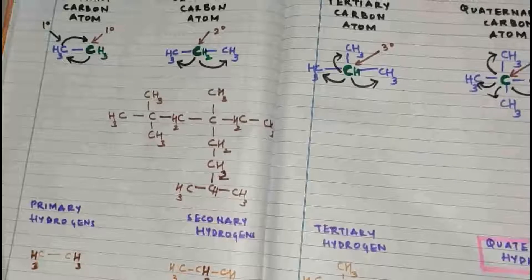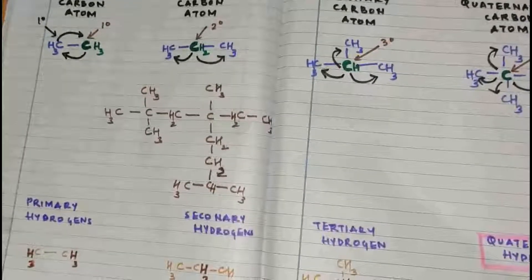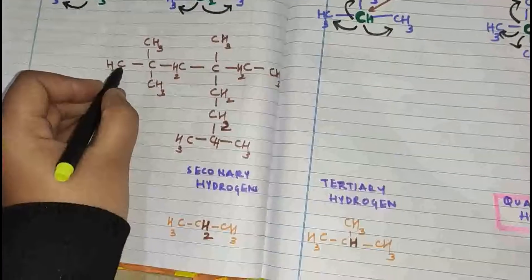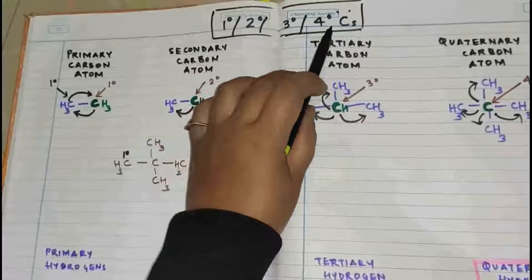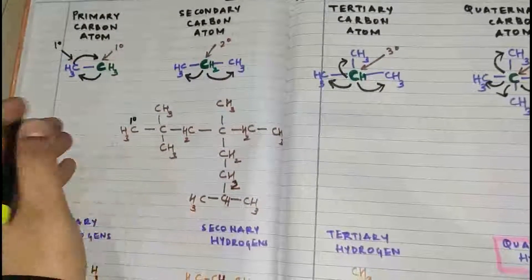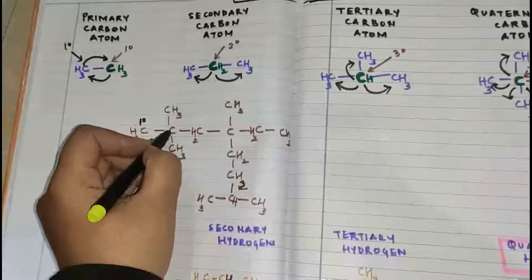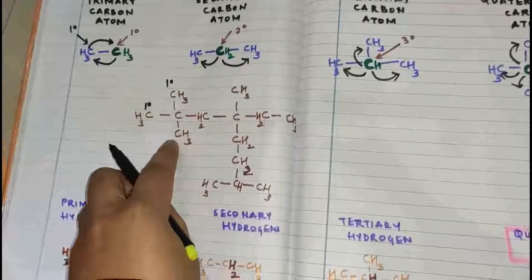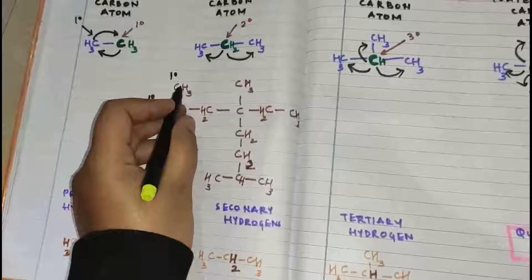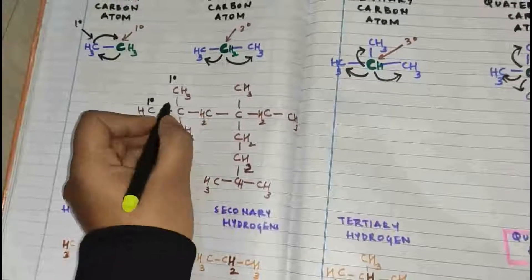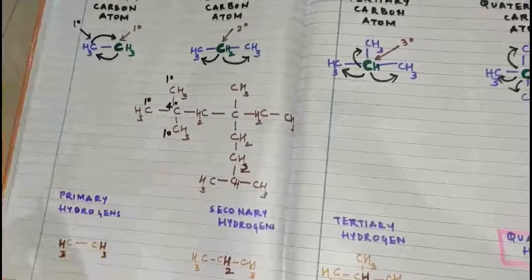I have got a structure here which I have drawn. In this structure, we will try to figure out whether the carbon atoms present are primary, secondary, tertiary, or quaternary. The first carbon here is attached to only one more carbon atom, so this carbon is going to be primary. This is again attached to one more — primary. This is again attached to one more — primary. This carbon is attached to one, two, three, and four, so this is going to be our quaternary carbon atom.